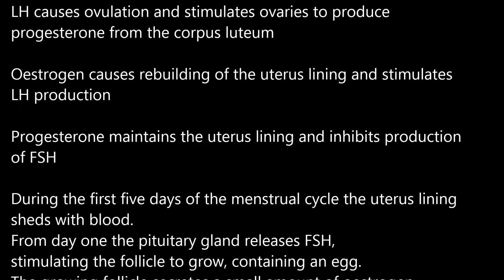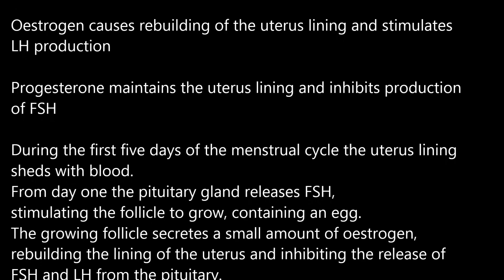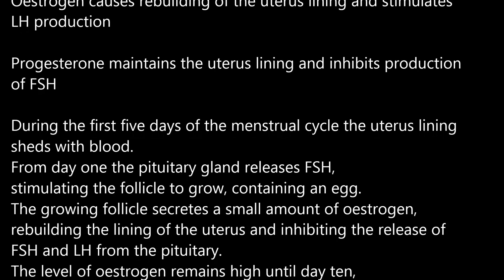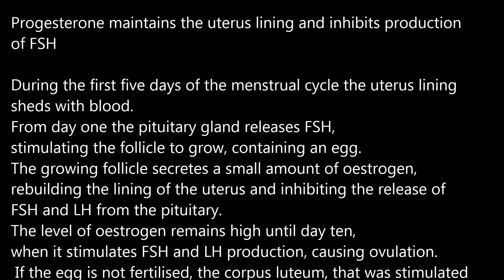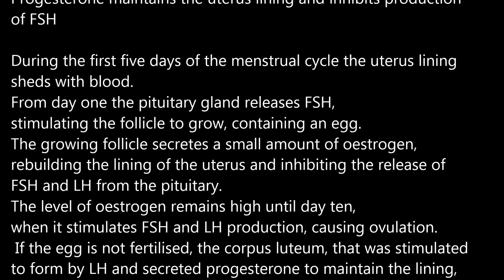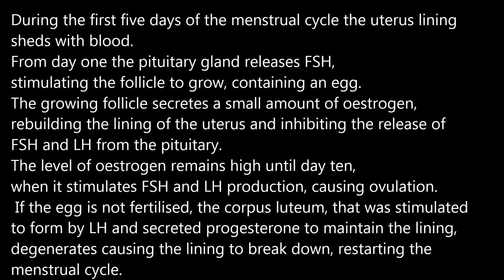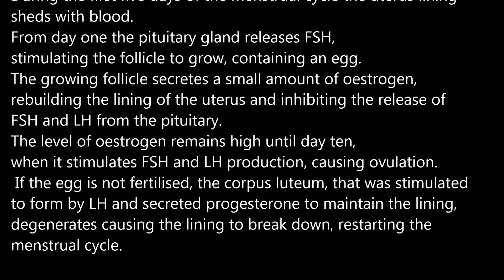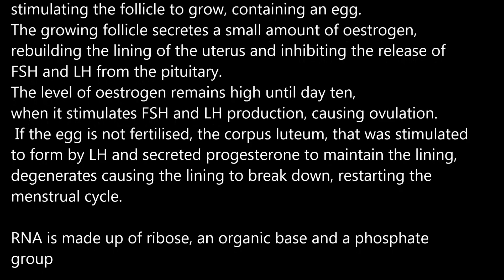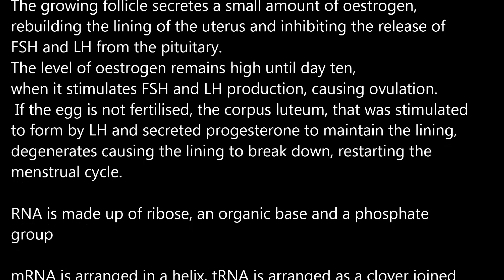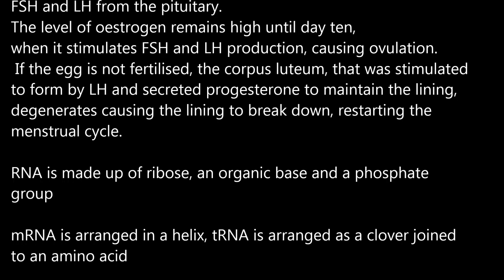During the first five days of the menstrual cycle, the uterus lining sheds with blood. From day one, the pituitary gland releases FSH, stimulating the follicle to grow containing an egg. The growing follicle secretes a small amount of oestrogen, rebuilding the lining of the uterus and inhibiting the release of FSH and LH from the pituitary. The level of oestrogen remains high until day 10, when it stimulates FSH and LH production, causing ovulation. If the egg is not fertilised, the corpus luteum, stimulated to form by LH and secreting progesterone to maintain the lining, degenerates, causing the lining to break down and restarting the menstrual cycle.